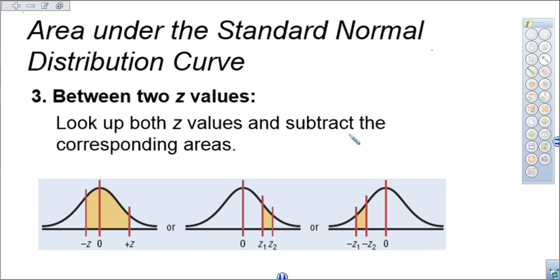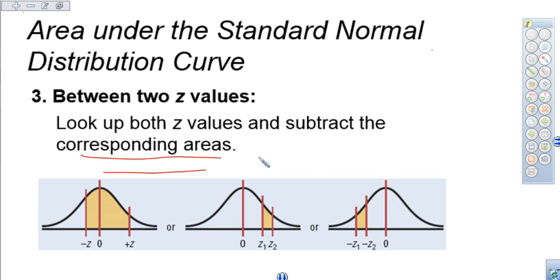The big difference here is that instead of just converting one z-value to a percentage, we have two z-values and we'll have to convert both. Once we find those corresponding areas or percents, we'll take those percents and subtract them.